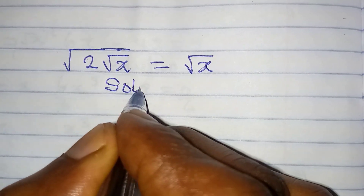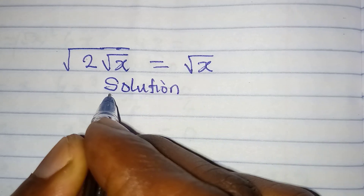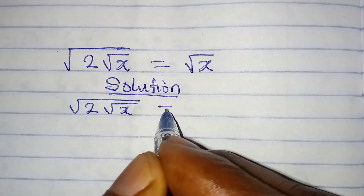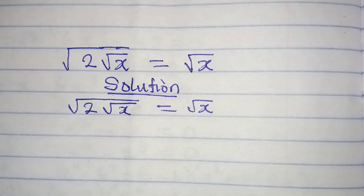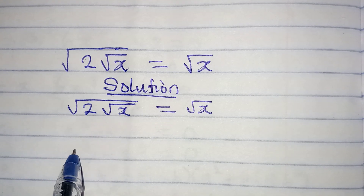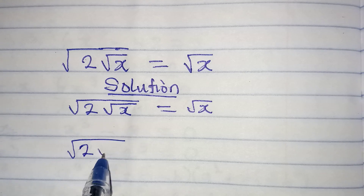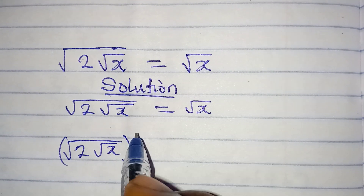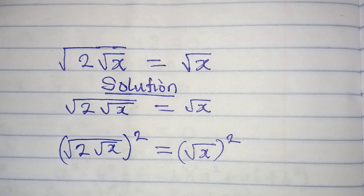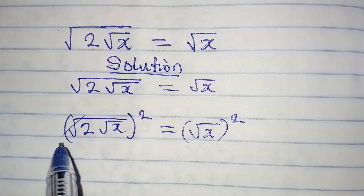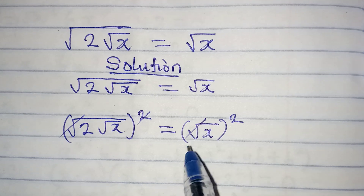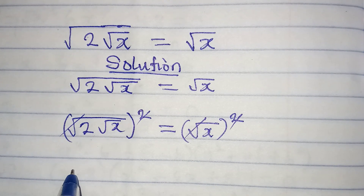Let's provide the solution to this problem: square root of 2 square root of x equals square root of x. The first thing is to remove the square root, so we square both sides. Squaring the left side gives square root of 2 square root of x squared, and squaring the right side — the square root and the square cancel — leaving the inner square root.